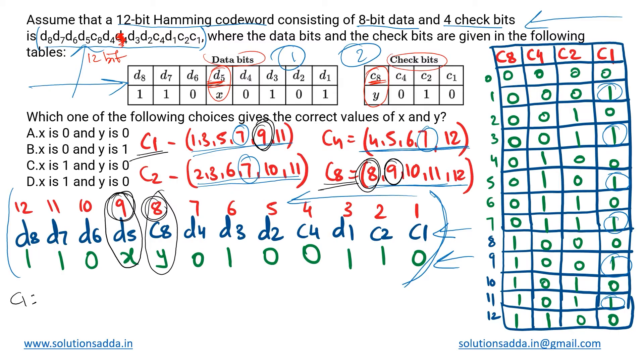According to c1, the positions it checks are all the odd positions: 1, 3, 5, 7, 9 and 11. So we will note down the bits on these positions. At position 1 we have bit 0, then at 3 we have bit 1, at 5 we have 0, at 7 we have 0, at 9 there is x, and at 11 there is a 1.